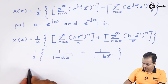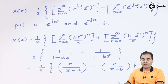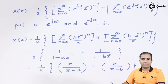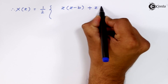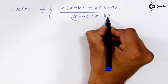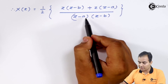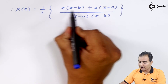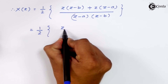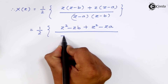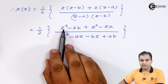Multiply numerator and denominator by z. Then perform cross multiplication to get the result. After cross multiplying, the numerator becomes z·(z−b) + z·(z−a), and the denominator is (z−a)·(z−b).